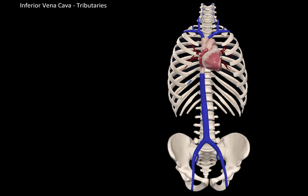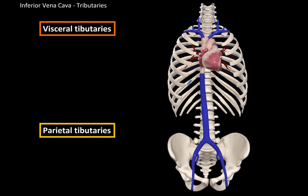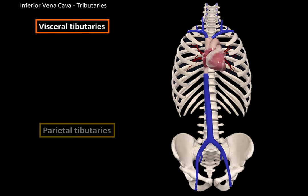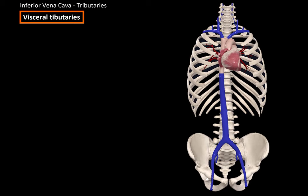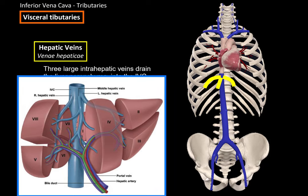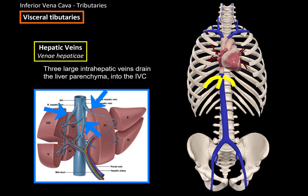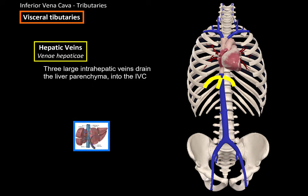Let's go through the visceral tributaries, which drain organs, and the parietal tributaries, which drain structures like bones and muscle. The first veins that drain blood into the inferior vena cava are the hepatic veins — three large intrahepatic veins that drain the liver parenchyma into the inferior vena cava. When blood from the portal system goes through the liver to be filtrated and processed, it flows through the hepatic veins and then into the systemic circulation again.